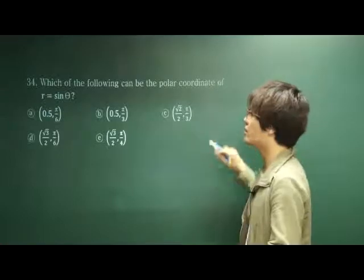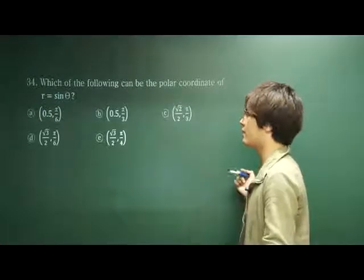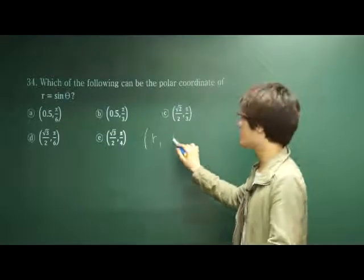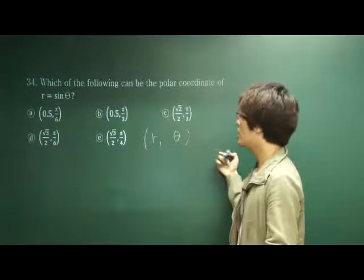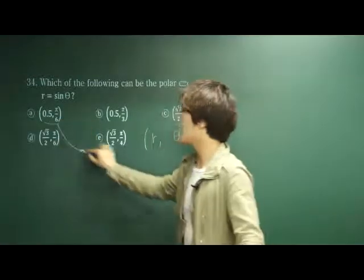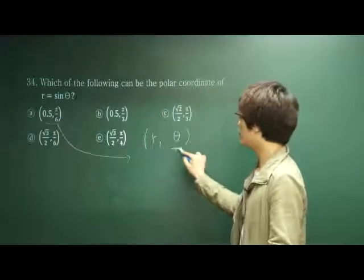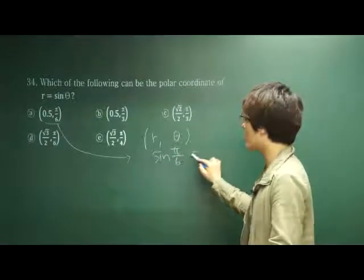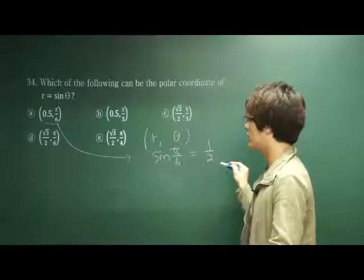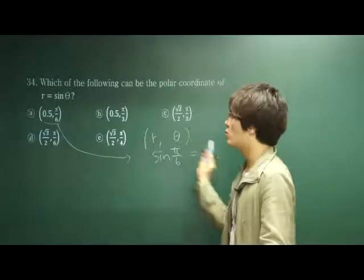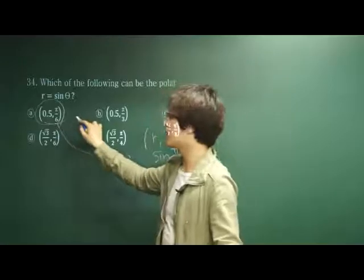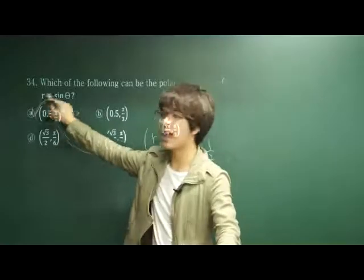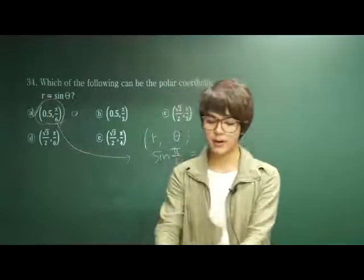Which of the following can be the polar coordinate of r equals sine theta? In this polar coordinate, it's consisted of radius r and theta. For example, let's say option a. When you put π over 6 in place of theta, sine π over 6 is equal to 1 over 2. It equals 0.5, so π over 6 is the correct answer. A is correct.